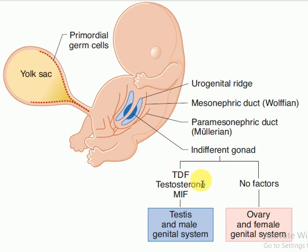For example, if due to some reason there is the presence of testes determining factor and testes which are producing testosterone, but somehow the testes are not producing the Müllerian inhibiting factor, then there will be development of both male and female reproductive structures.